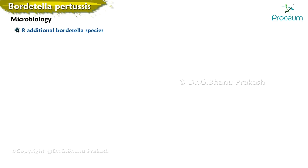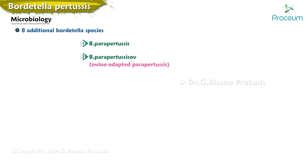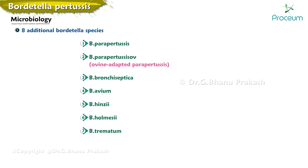Eight additional Bordetella species have been described: Bordetella parapertussis (human), Bordetella parapertussis (ovine-adapted), Bordetella bronchiseptica, Bordetella avium, Bordetella hinzii, Bordetella holmsii, Bordetella trematum, and Bordetella petrii.